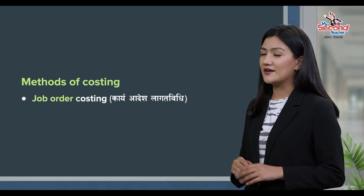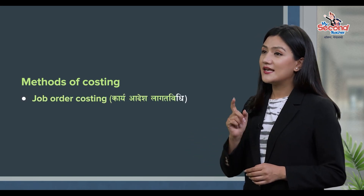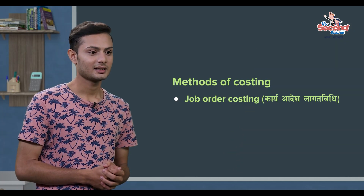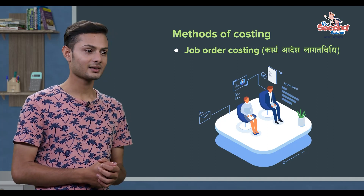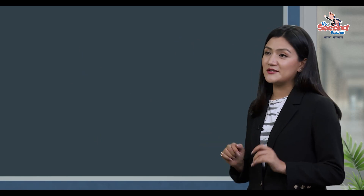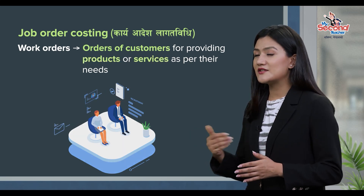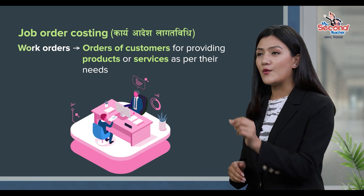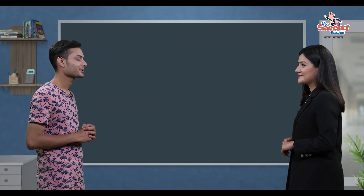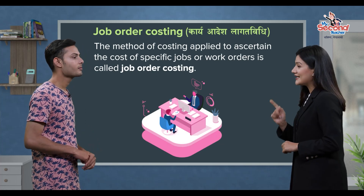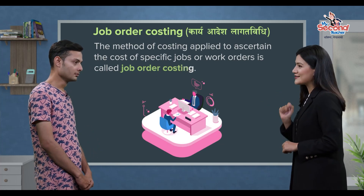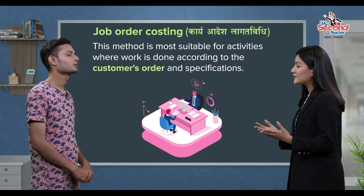First, Job Order Costing. The costing method is called Job Order Costing, and it is called Job and Work orders. The costing method is a costing tool, and if customers place cost orders, it is suitable for costing that order.